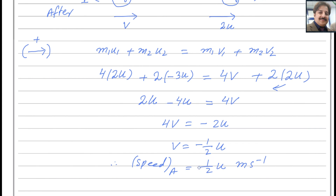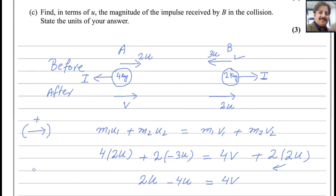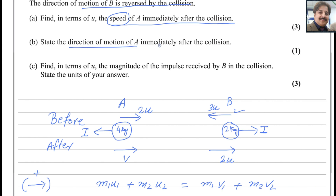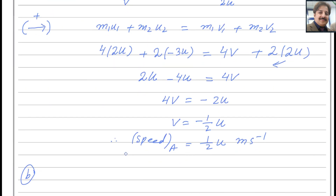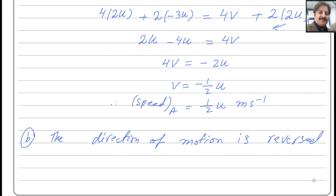For the second part: state the direction of motion of A after the collision. We assumed A was moving to the right, but we got a negative answer, so the direction is reversed. Therefore, the direction of motion of A is reversed after the collision.